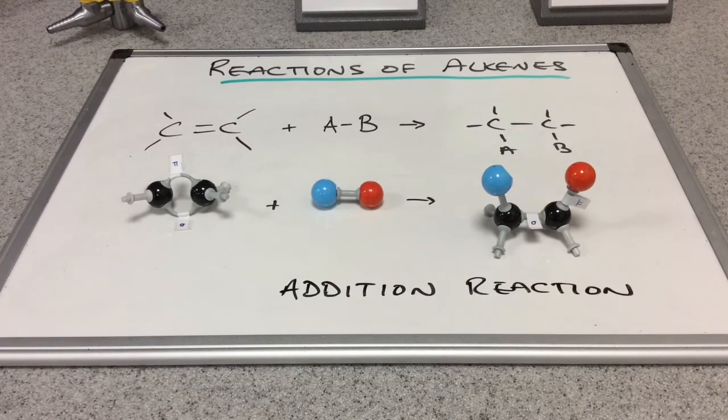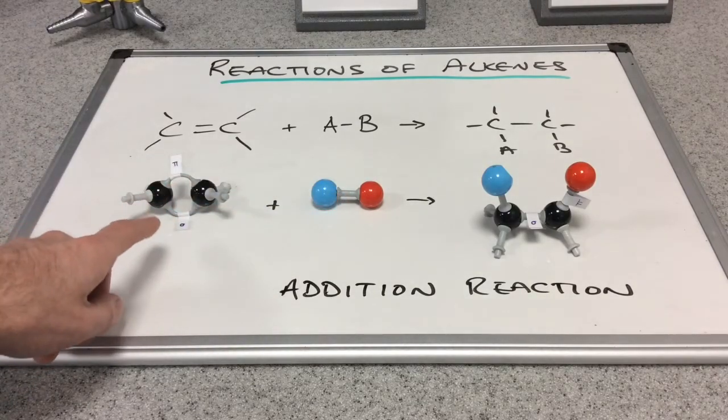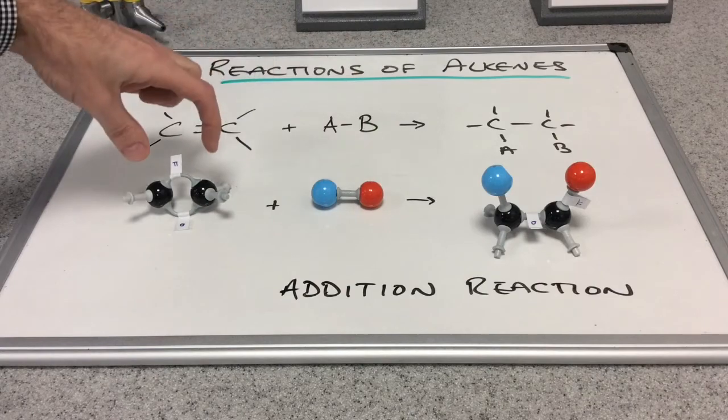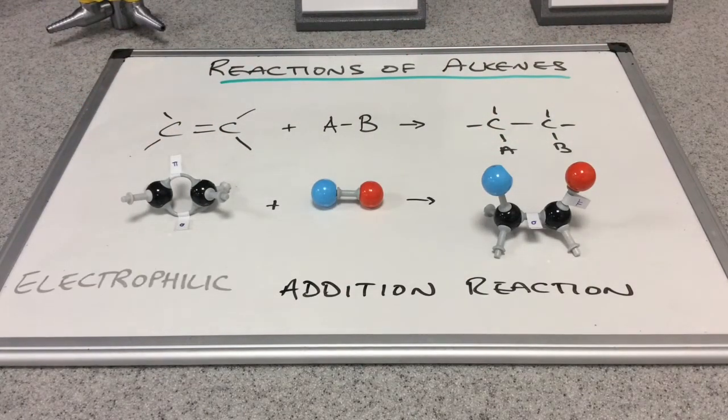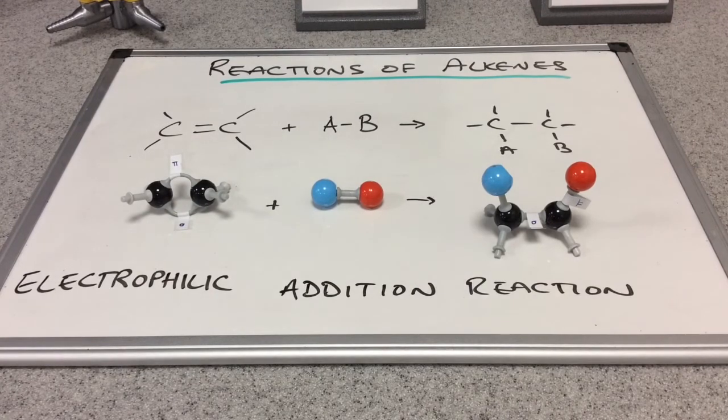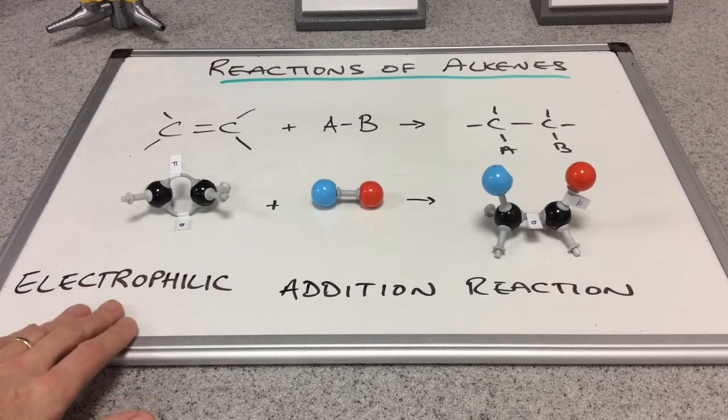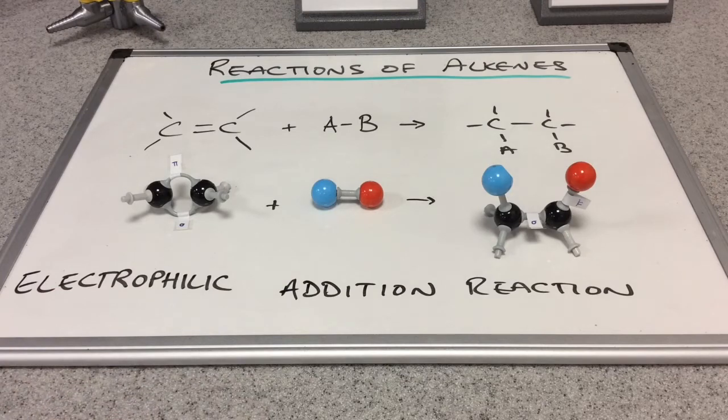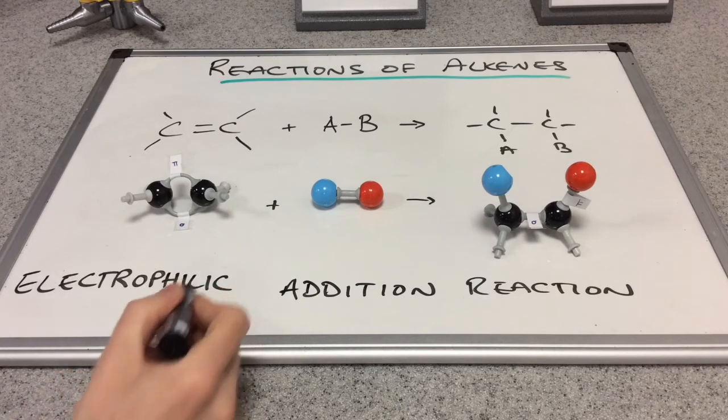This type of reaction is known as an addition reaction, and it's fairly obvious to see why. We've started with two reactants and added this across the double bond to create one product. In another video I go into the detail of the mechanism, but for this overview, this is known as electrophilic addition. Just be careful with your spelling of electrophilic—there's only one L at the end.